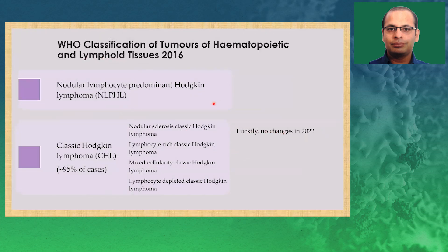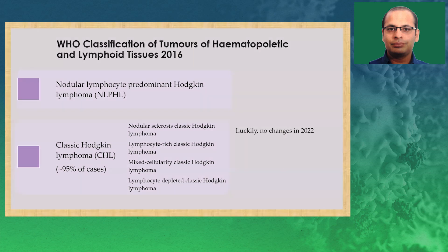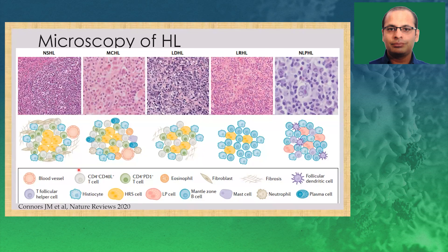Classification-wise, we see two types: NLPHL and classical Hodgkin lymphoma. NLPHL accounts for around 5% of cases and classical for 95%, with four subtypes as mentioned in 2016 — and luckily no changes in 2022. Subtypes are diagnosed on the basis of histomorphology. In nodular sclerosis type, there are Hodgkin cells, fibrosis, and inflammatory milieu. In mixed cellularity, it's mostly inflammatory milieu with few Hodgkin cells and no fibrosis. In lymphocyte depleted, there are few lymphocytes. In NLPHL, the classical Hodgkin cells are not present; instead we have LP cells and inflammatory milieu.